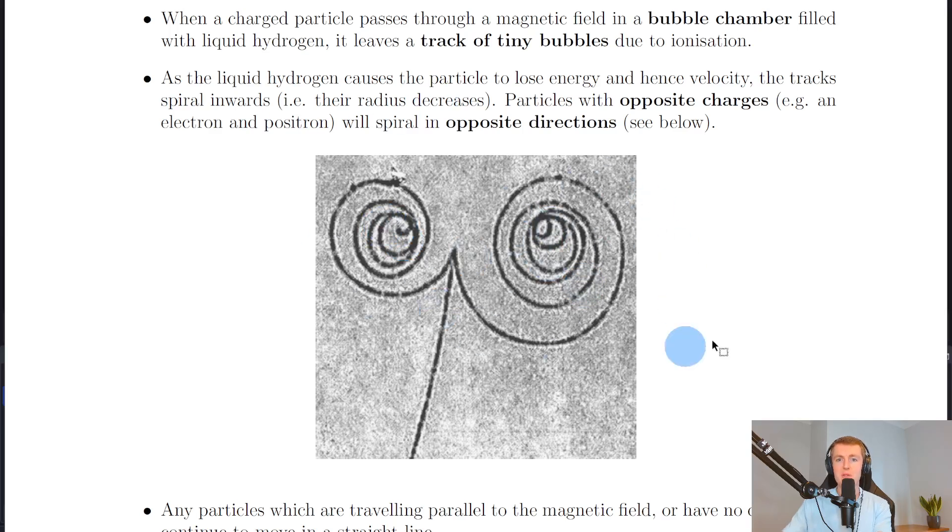In fact, this is an example of detecting antimatter. Positrons are the antiparticles of electrons, and this diagram shows the path of one particle splitting into two. Because the electron and positron have opposite charges, they spiral off in opposite directions.